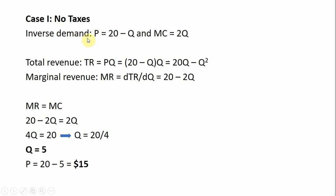Case one will be our reference case. We have a monopoly that faces an inverse demand curve given by P, or price equals 20 minus Q, where Q is the quantity demanded. The monopolist faces a marginal cost of MC equals 2Q.